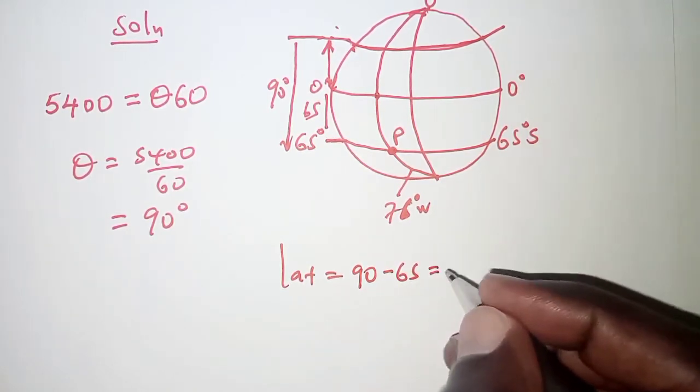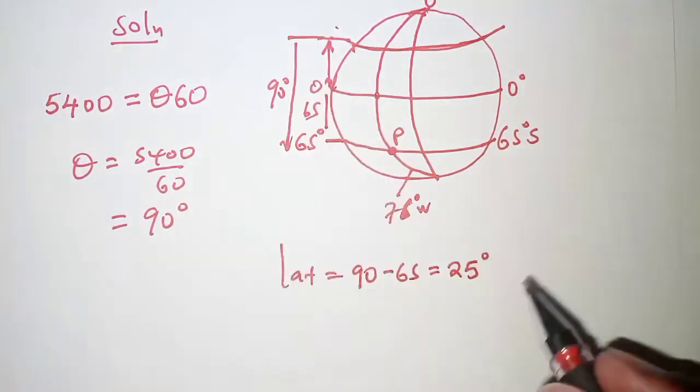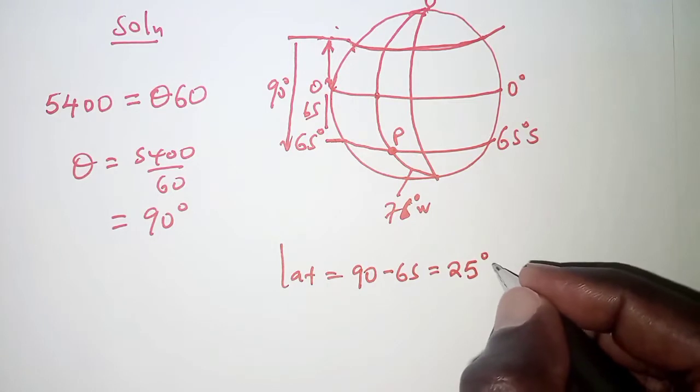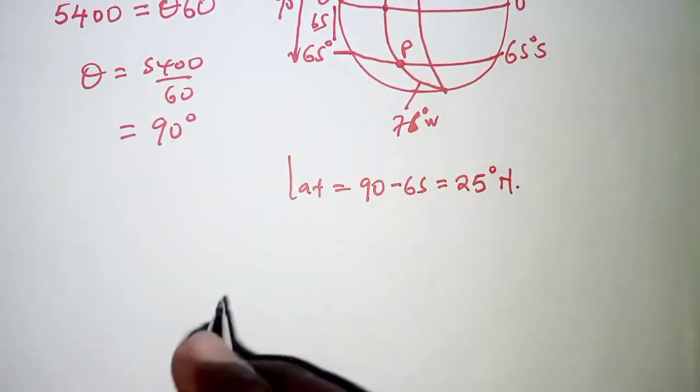We'll therefore say the latitude is obtained by having 90 degrees minus 65. And that is 25 degrees. And because it's to the north of equator, then we'll say 25 degrees north. But this is not yet the position of Q.